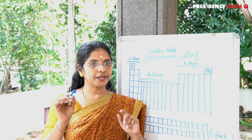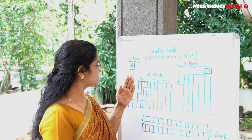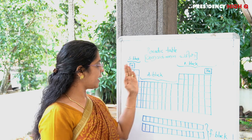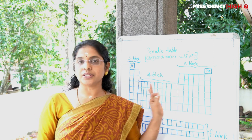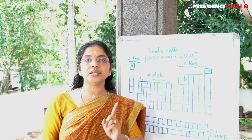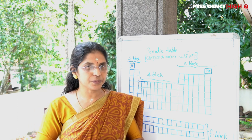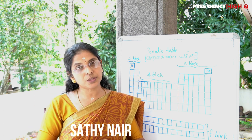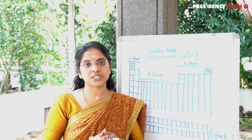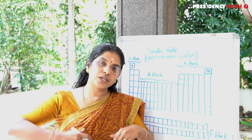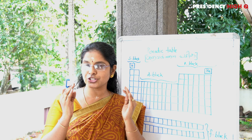The arrangement of elements in the periodic table is based on their electronic configuration. Elements 1 to 92 are naturally occurring. Elements from 93 onwards are prepared in the laboratory and are not found in nature.